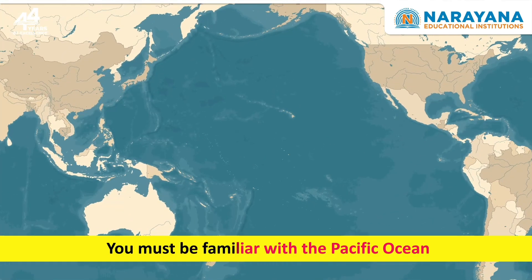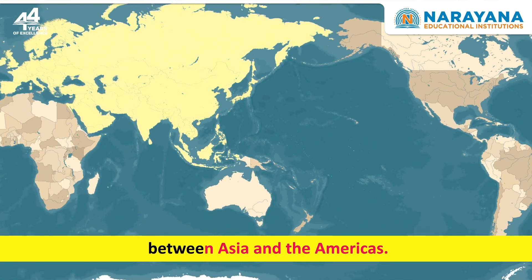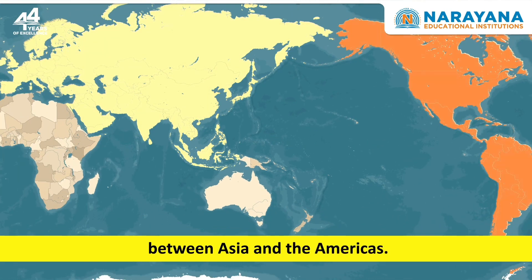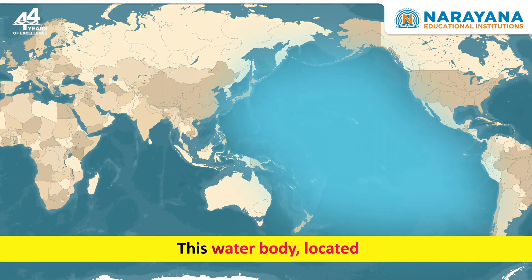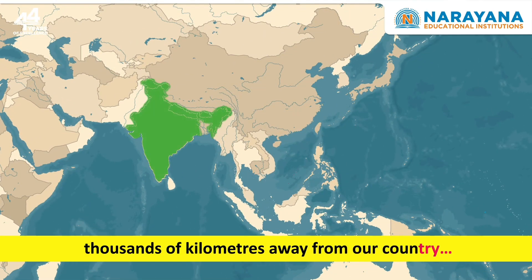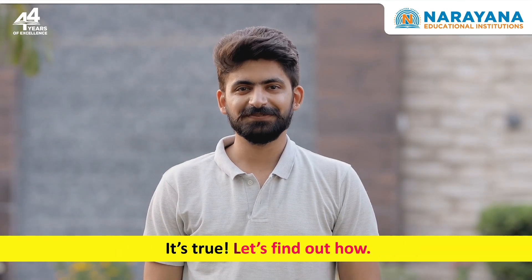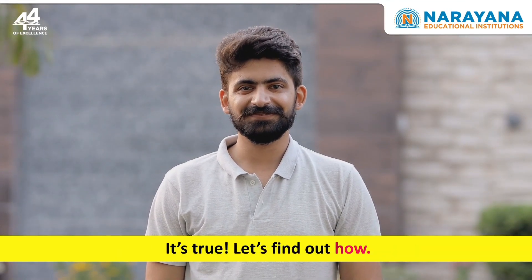You must be familiar with the Pacific Ocean as the vast expanse of water between Asia and the Americas. This water body, located thousands of kilometers away from our country, has a huge impact on monsoons in India. It's true! Let's find out how!